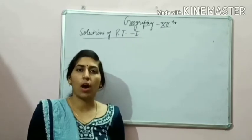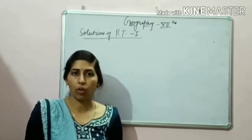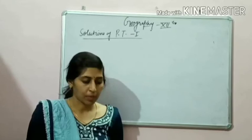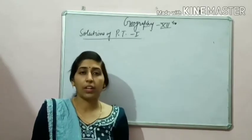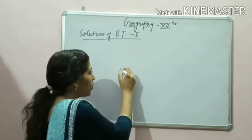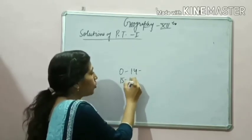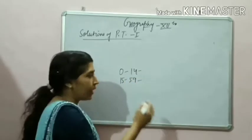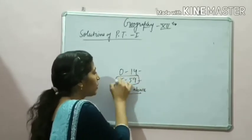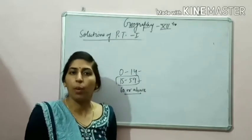The first question is related to working population. Working population has been studied when we have age structure. One group is 0 to 14, which is the children group; another one is 15 to 59, which is the working age; and one group is 60 or above. The correct answer is 15 to 59 years — they are the working population.